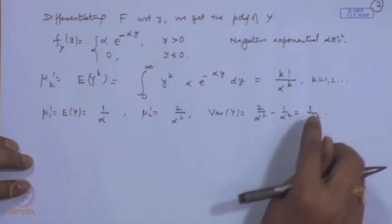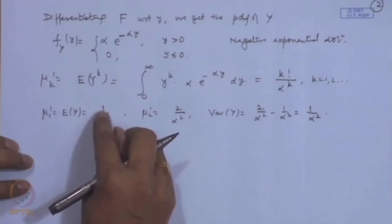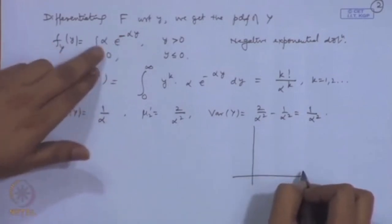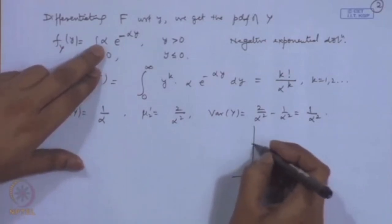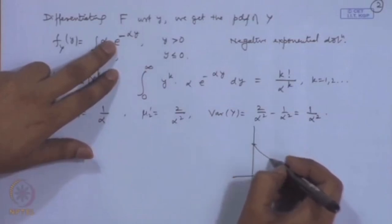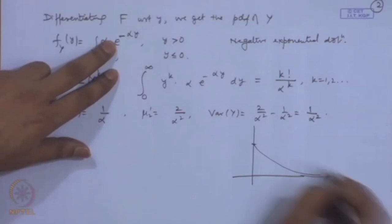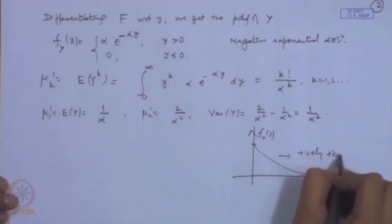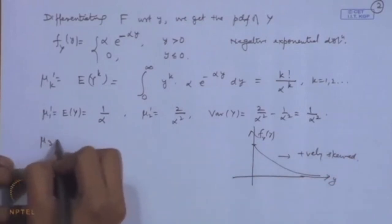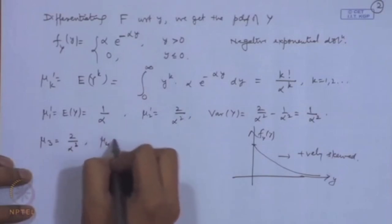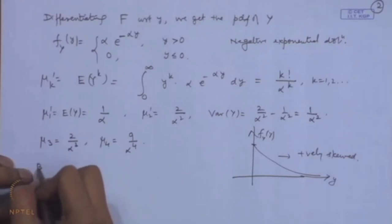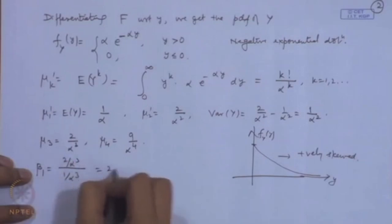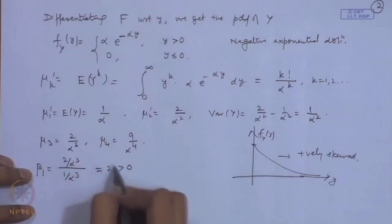Taking μ'_2 = 2/α², the variance of Y equals 2/α² − 1/α² = 1/α². So for the exponential distribution, the variance is the square of the mean. The distribution is easy to plot: at y = 0 the value is alpha, and it decreases thereafter because e^(−αy) is a decreasing function. This is a positively skewed distribution.